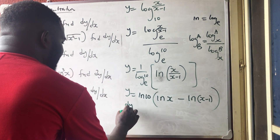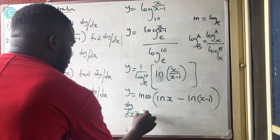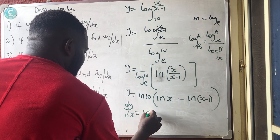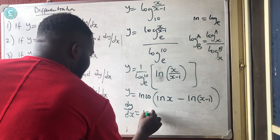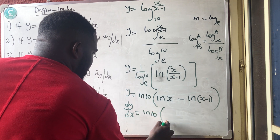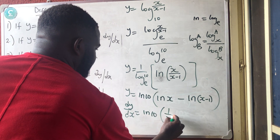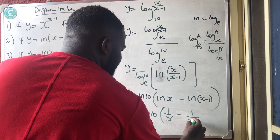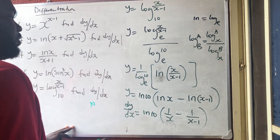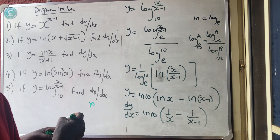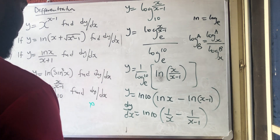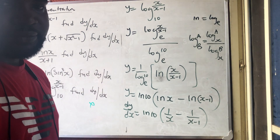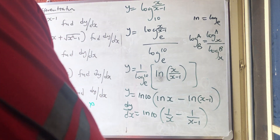So dy/dx equals (1/ln 10) times the derivative of [ln x minus ln(x−1)], which gives (1/ln 10) times [1/x minus 1/(x−1)]. That is the final answer. Thank you very much for watching. God bless you.